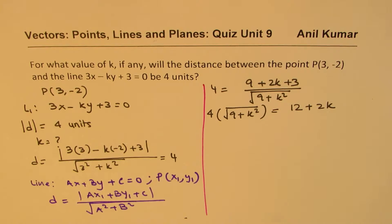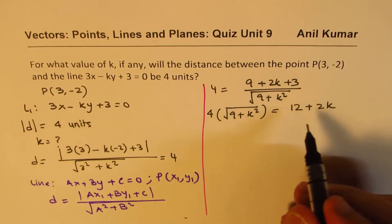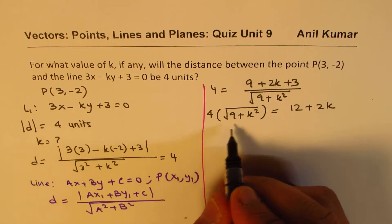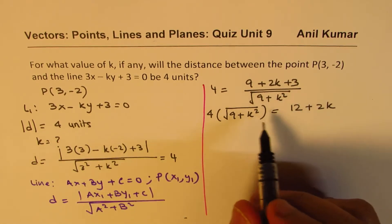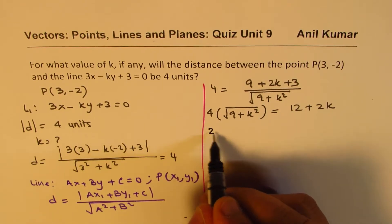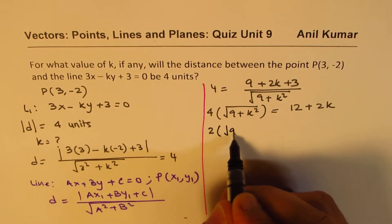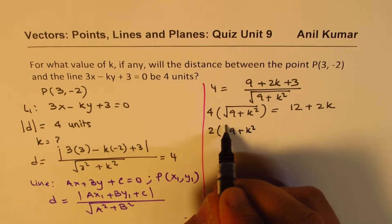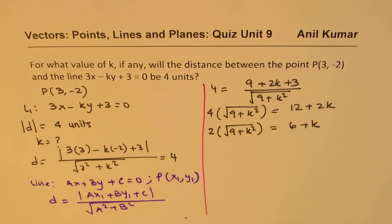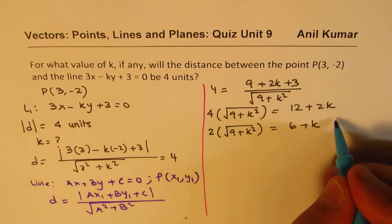I can simplify this a bit. We can divide by 2. So let's write 2√(9 + k²) = 6 + k. Now we'll square both sides to get rid of the square root.